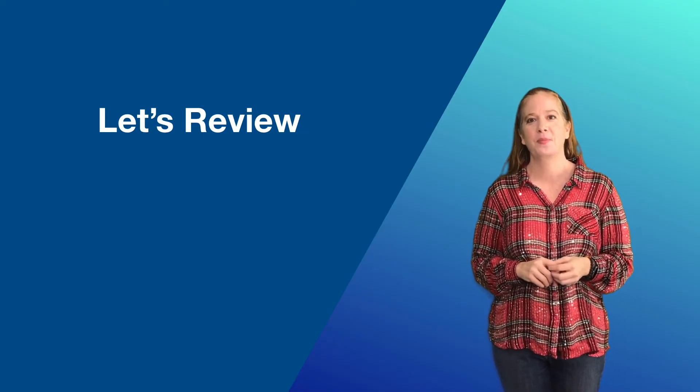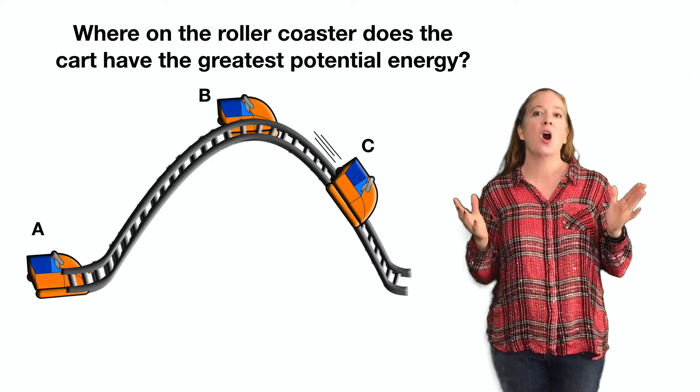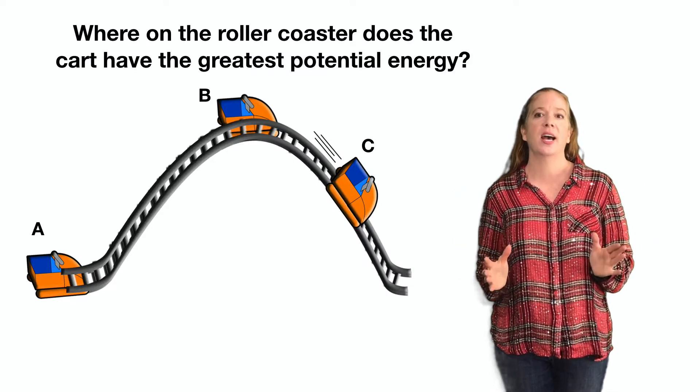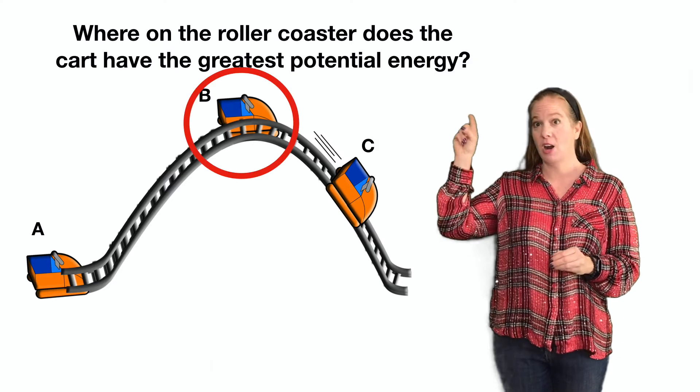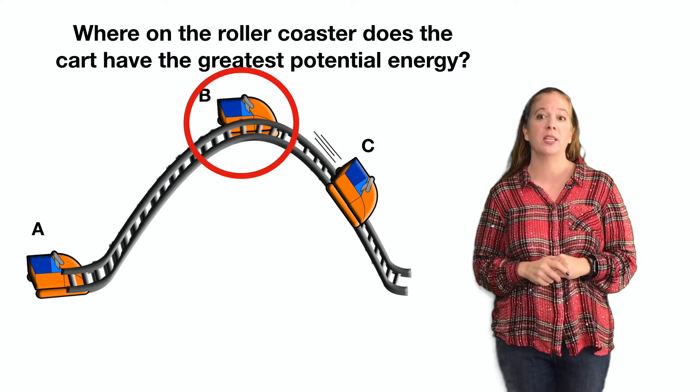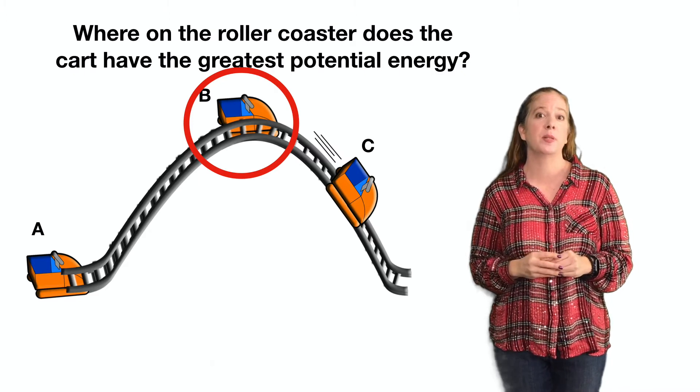Let's reveal. Where on the roller coaster does the cart have the greatest potential energy? Cart B is at the highest point here, so it has the greatest potential energy.